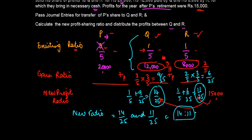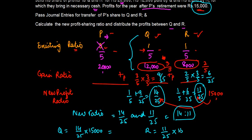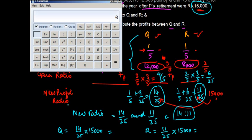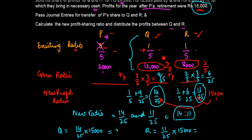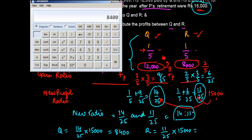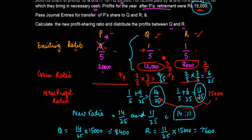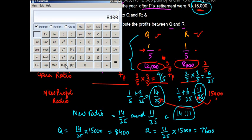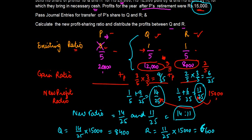The new profit sharing ratio is 14:11. The future profits of fifteen thousand will be shared between Q and R. Q gets 14/25 into fifteen thousand, and R gets 11/25 into fifteen thousand. Using the calculator: 14 × 15,000 ÷ 25 = eight thousand four hundred for Q. For R: 11 × 15,000 ÷ 25 = six thousand six hundred. A calculation error was caught and corrected — R's share is six thousand six hundred, not seven thousand six hundred.